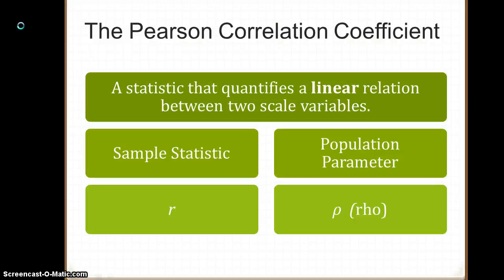The Pearson correlation coefficient is a statistic that quantifies a linear relation between two scale variables. We have two continuous variables, and the relationship between them has to be one in which you can fit a straight line. It is symbolized as a sample statistic by an italicized Roman R.